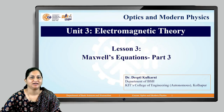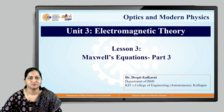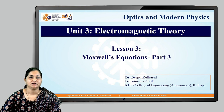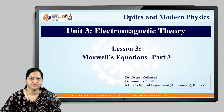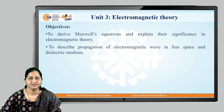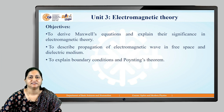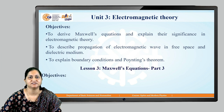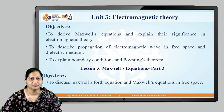Welcome back. We are discussing Unit 3, that is Electromagnetic Theory, of Optics and Modern Physics. We have seen Maxwell's first three equations in our previous two videos. In this video we will see Maxwell's fourth equation. The objective is to derive Maxwell's equations and see their significance in electromagnetic theory, including propagation of electromagnetic waves in free space and dielectric medium, and boundary conditions and the Poynting vector.